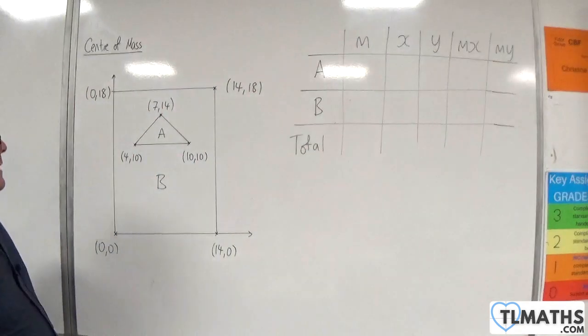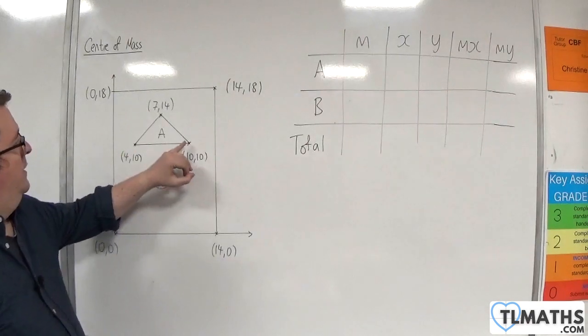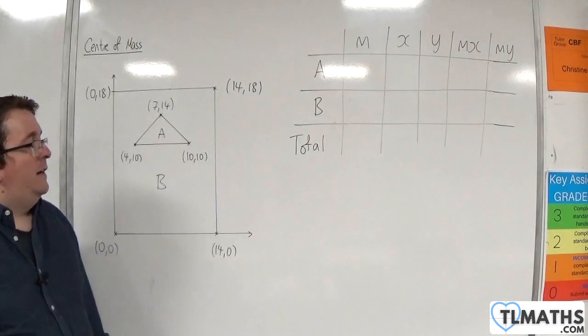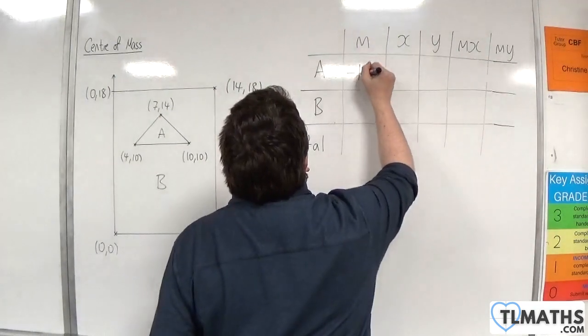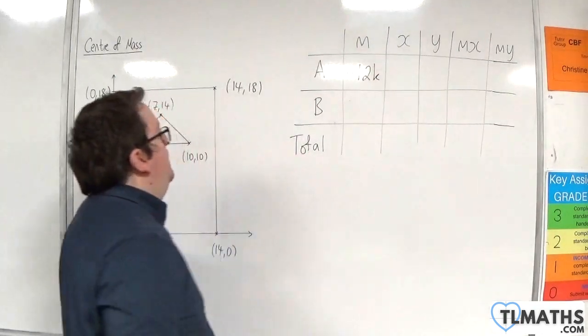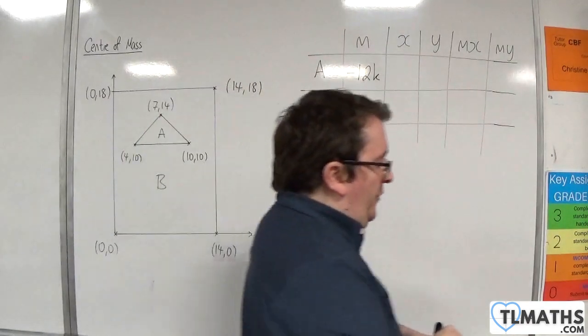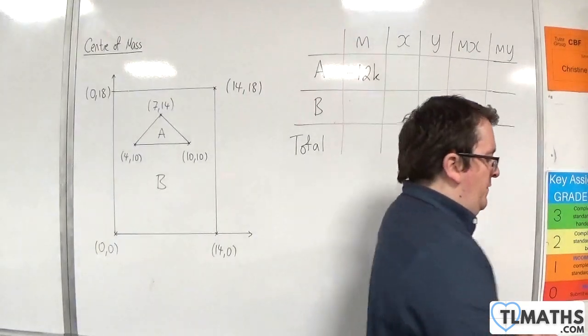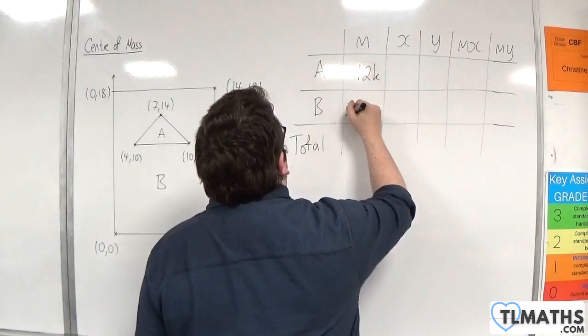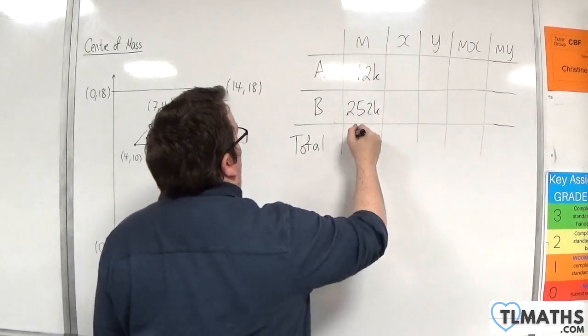The mass of the triangle: the area of the triangle is 6 times 4, and then half that, so that's 12, so 12k. But it's been cut out, so minus 12k. The mass of the rectangle is 14 times 18, which is 252, so 252k. So the total mass is 240k.